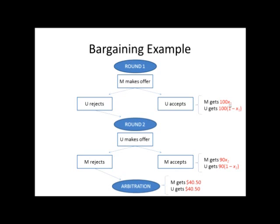They're going to say we get X1 and you get everything else. So if there's $100 to be divided up, we multiply that by the fraction management has proposed. If management said X1 equals 0.75, that means they get 75%, which is $75, and the union gets 25%, which is $25. If the union rejects that offer, we move to round two. The total available has decreased by 10% from $100 to $90. The union makes an offer for X2 — a share for management to keep. If management accepts, they get X2 times 90 and the union gets 1 minus X2 times 90. If management rejects that offer, it goes to arbitration. The arbitrator splits whatever's left, so the $90 gets reduced by 10% to $81, and half of $81 is $40.50 for each side.